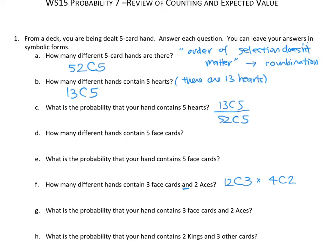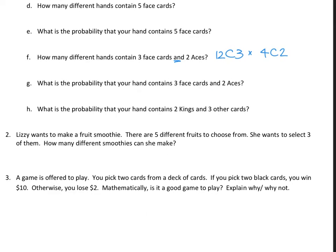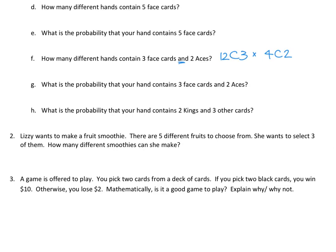Part G: what is the probability that your hand contains three face cards and two aces? It follows directly from part F. The answer is 12C3 times 4C2 over 52C5, using 52C5 as the sample space and the numerator as all the hands matching our condition.